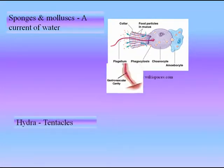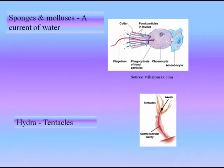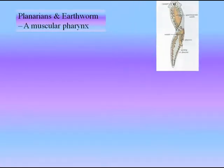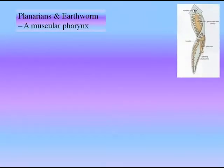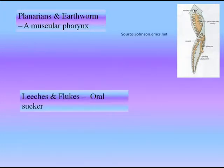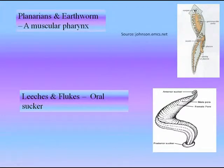Hydra takes its food with the help of tentacles. Earthworms and planarians use their pharynx to take food inside. Leeches and flukes have oral suckers — anterior suckers and posterior suckers — and with the help of these suckers they intake their food.